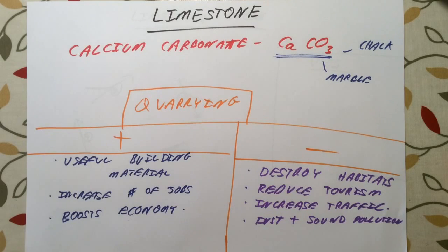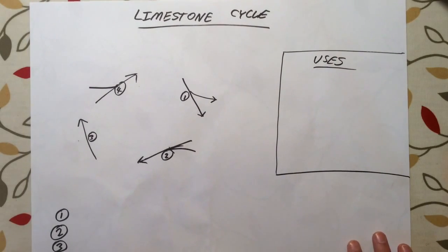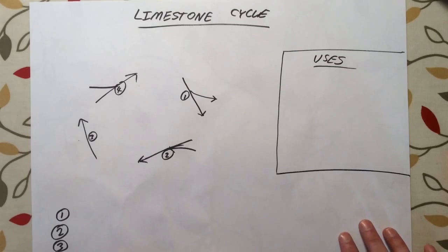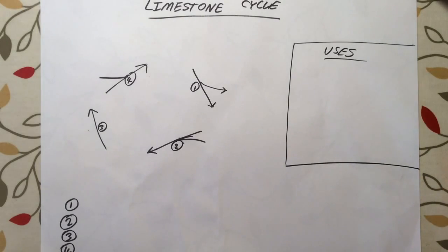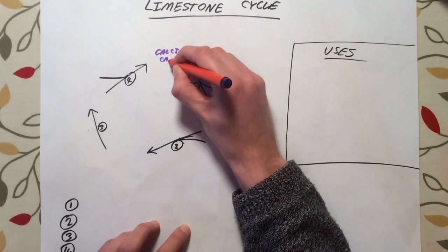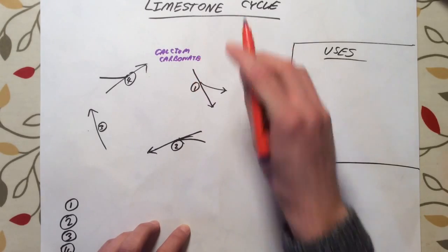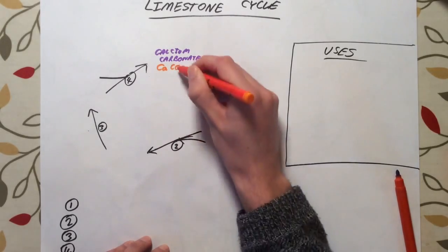This section normally comes up as a six-mark question, so as long as you're well prepared and have a few ideas about advantages and disadvantages of quarries, you're going to do quite well on that question. The next section we need to know about is the limestone cycle, which is a series of chemical reactions starting from calcium carbonate that produces a set of different products which all have different uses. I'm going to go through these step by step, starting with calcium carbonate, and use symbolic equations in orange as we go through.